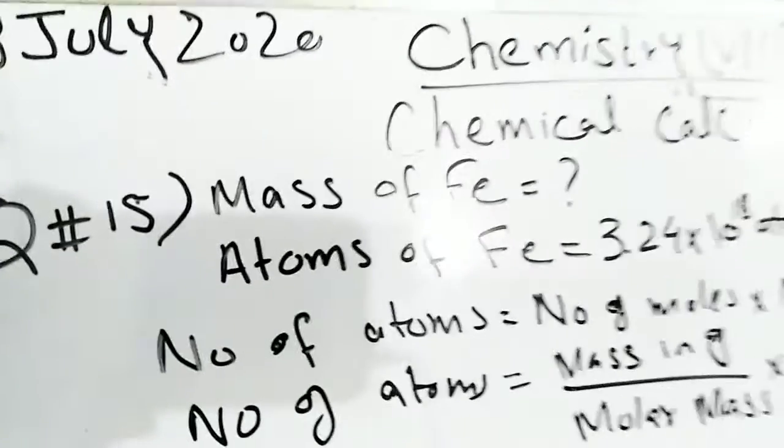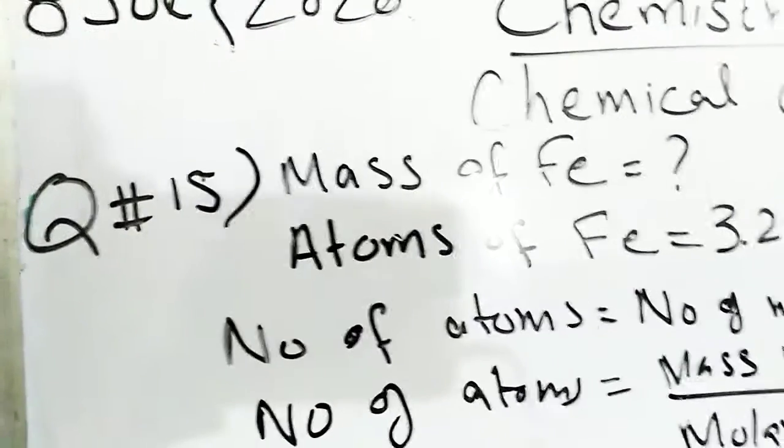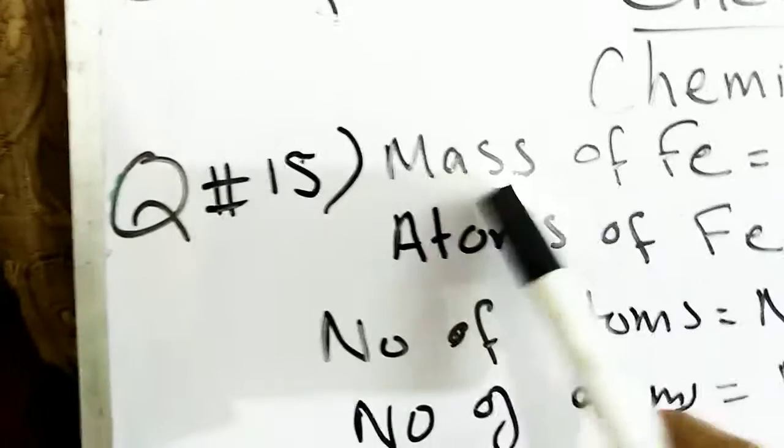In question number 15, we have to calculate the mass. Then in part A, 3.24 × 10^18 atoms of iron. Atoms of iron, symbol of iron is Fe.